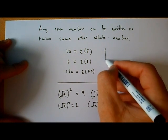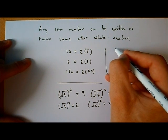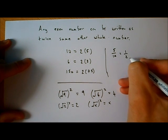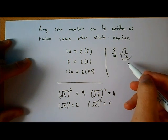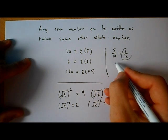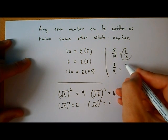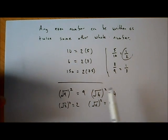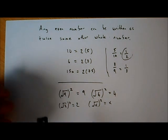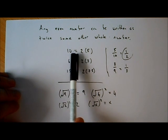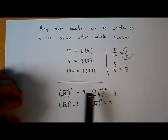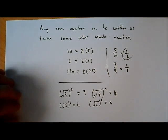One other thing: you should remember that fractions can always be written in their lowest terms. For example, 5 over 10 is the same as 1 over 2. Or 3 over 9 - divide top and bottom by 3 - gives 1 over 3. So these three ideas - even numbers as twice something, squaring a square root, and fractions in lowest terms - are what we're going to use to prove that the square root of 2 is irrational.